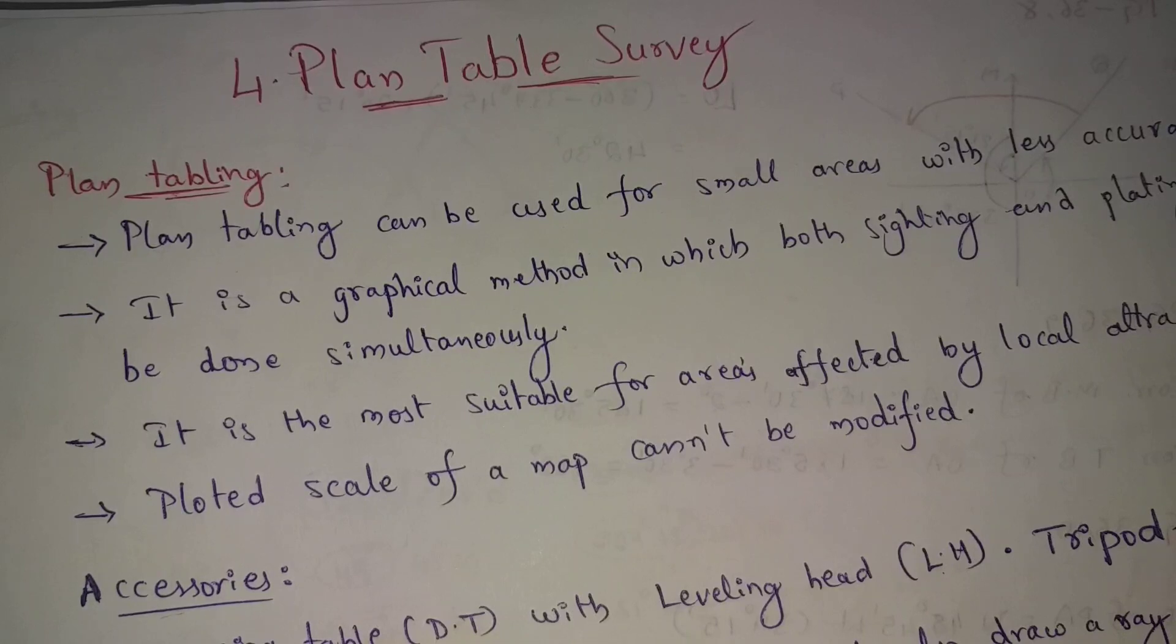It does not give very accurate results. This is the main disadvantage in plane table surveying. Accurate results are not the same, so it is the main disadvantages. These are the advantages and disadvantages of plane table surveying.